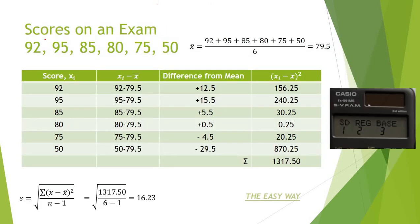Suppose you are given scores on an exam with this data. We have 92, 95, 85, 80, 75, and 50.